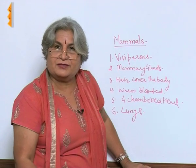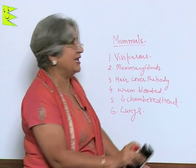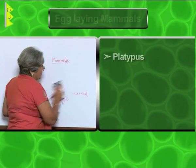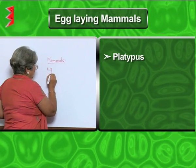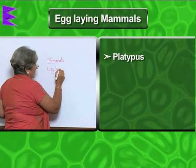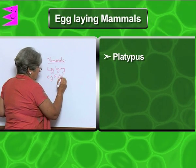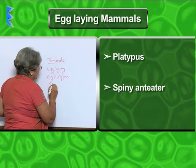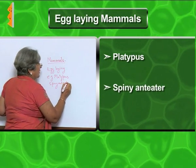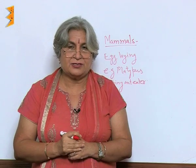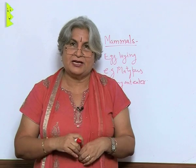Are there any mammals which do not give birth to young ones? Yes, there are some egg-laying mammals, like the platypus and the spiny anteater.